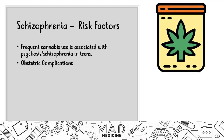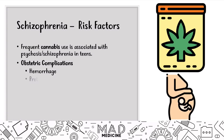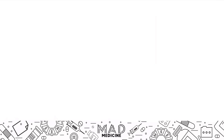Another risk factor that can cause schizophrenia is obstetric complications, and this is very important to understand. You may be told in the patient's history on the vignette that the patient had some sort of obstetric complication, like a hemorrhage when they were being born, preterm labor, an RH mismatch that could cause hemolytic disease of the newborn, fetal hypoxia, or an infection that led to schizophrenia later on. This is probably the more important of the two risk factors.